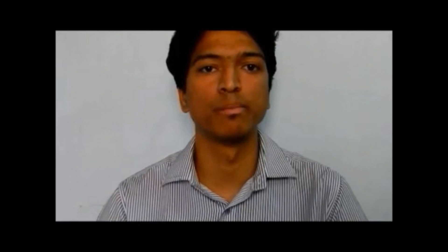This prototype has been created using the MSP430 LaunchPad, which uses the MSP430 G2553 microcontroller. The MSP430 G2553 uses an on-chip temperature sensor. This is the board carrying the other sensors, namely the humidity sensor and the accelerometer. This is the GPS module used for cargo tracking. This is the GSM modem used for sending an SMS to the user about cargo status. For serial communication, we have used MAX232N from Texas Instruments.